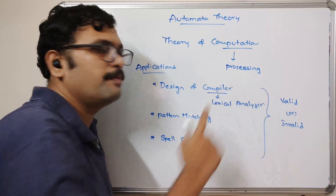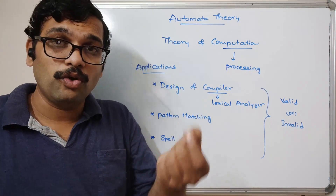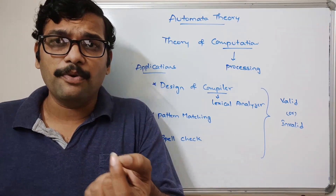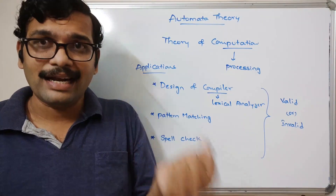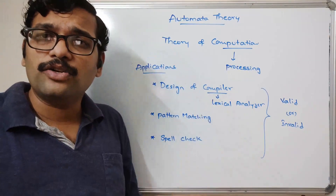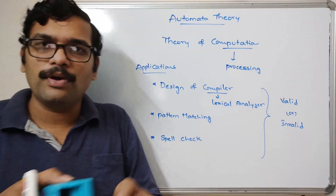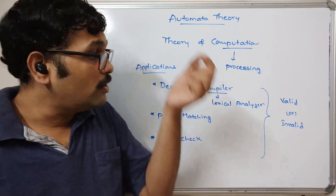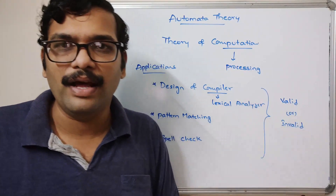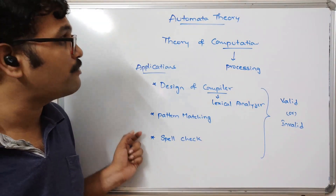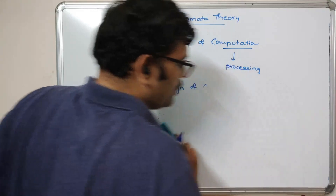In the compiler, the program is divided into tokens — identifiers, operators, data types, and so on. These are all called tokens. The compiler sets some rules and the program must follow those rules. It compares each term with those rules and returns whether it is valid or invalid. These are the key applications where we use automata theory.